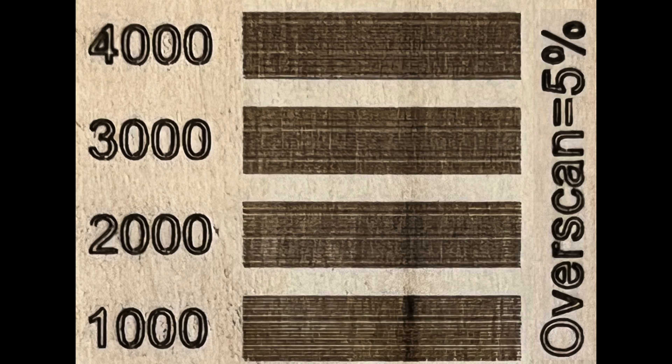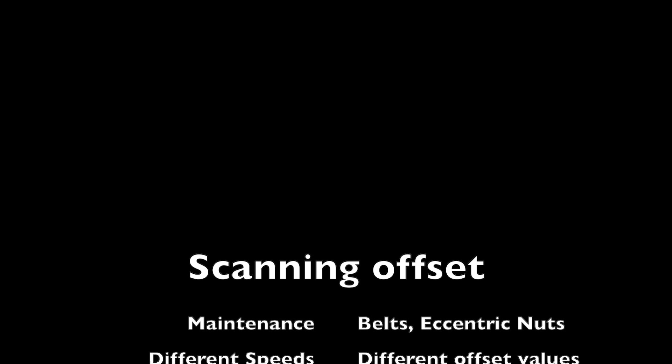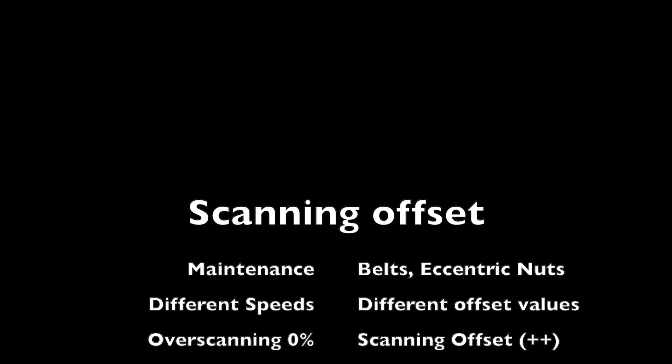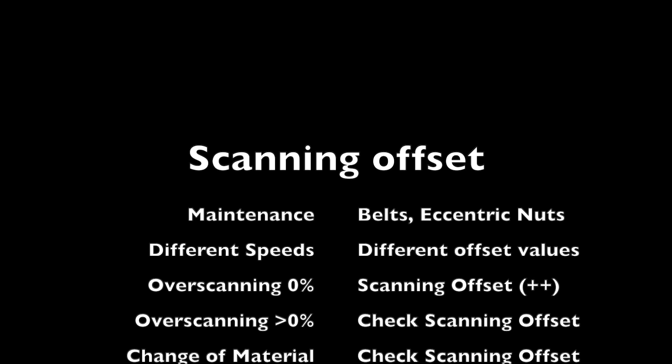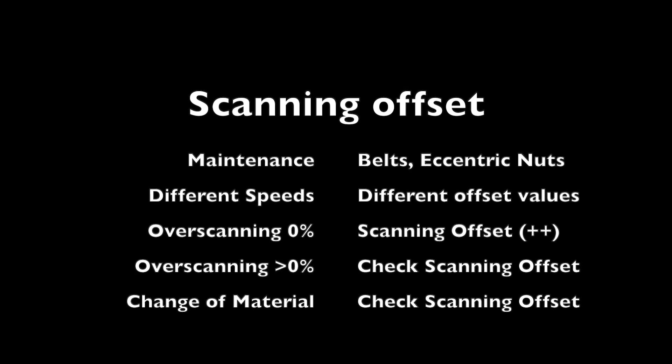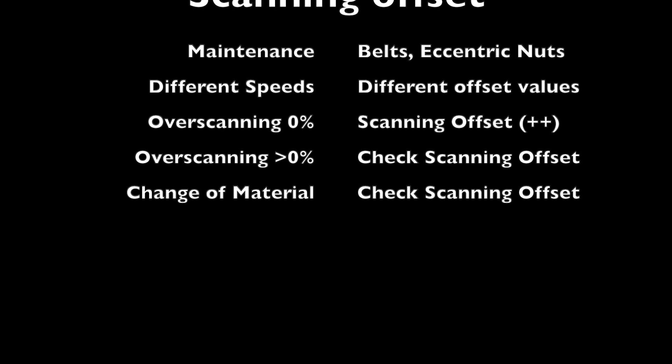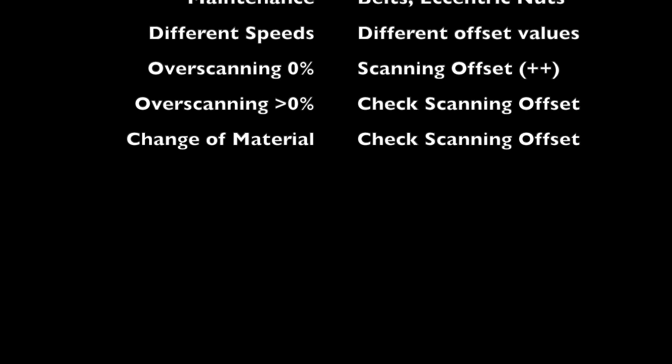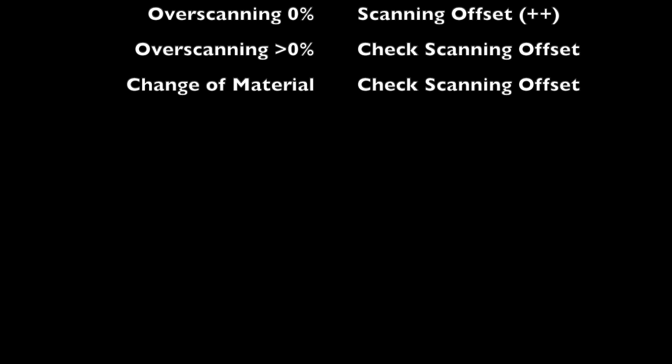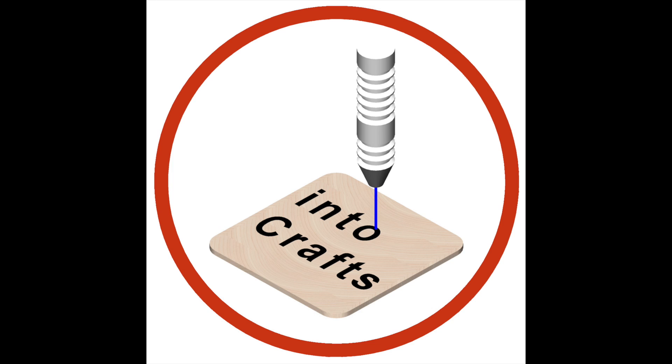As a summary, scanning offset should be checked after each service and readjusting the belts and eccentric knots. It has high importance in case over-scanning is disabled, and it should be checked in case of non-zero over-scanning values and also when changing to another type of material. Thanks for watching and see you another time.